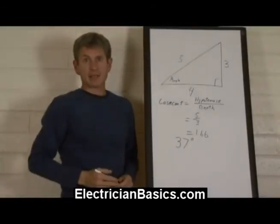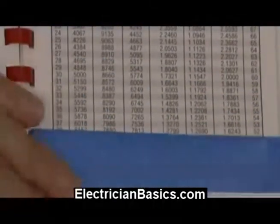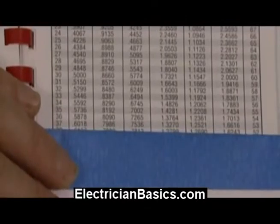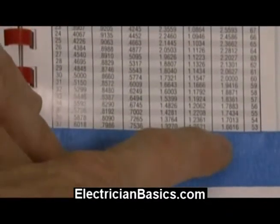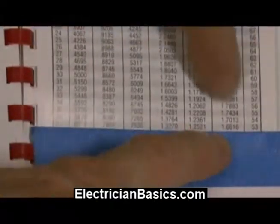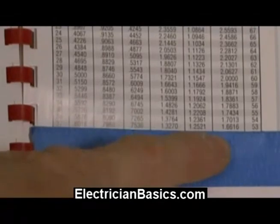37 degrees is the angle that I looked up. Okay, so we went through and I said 37 was the angle and if we look it up we go to the cosecant column and we're down here and we have 1.6616.